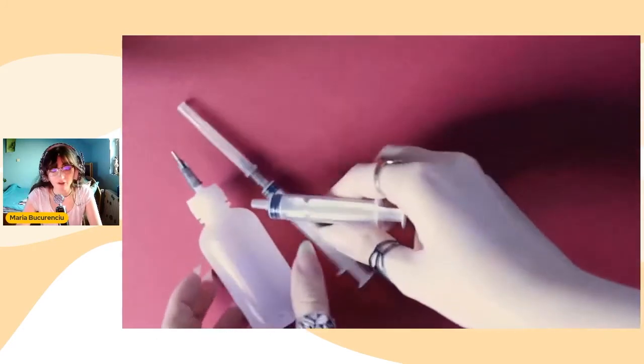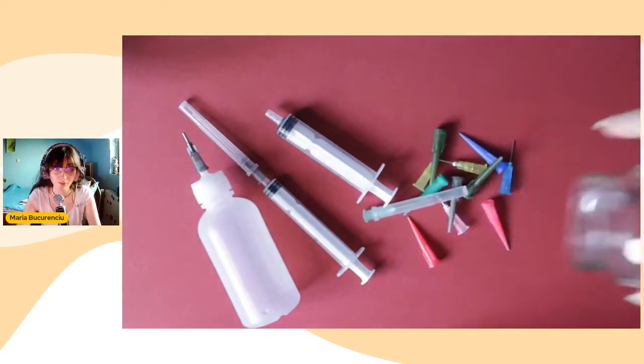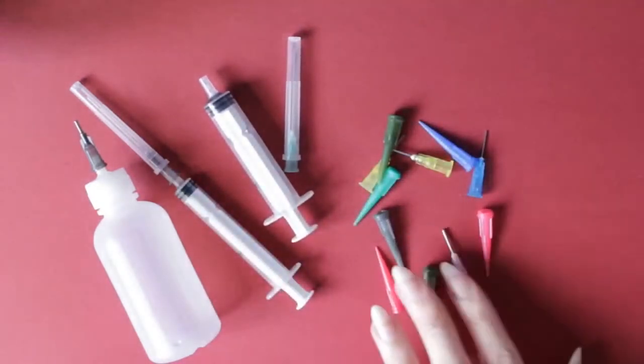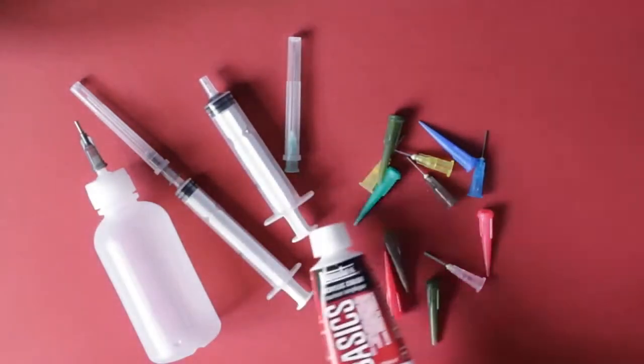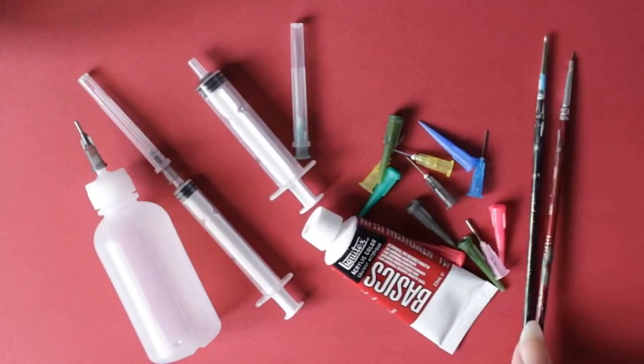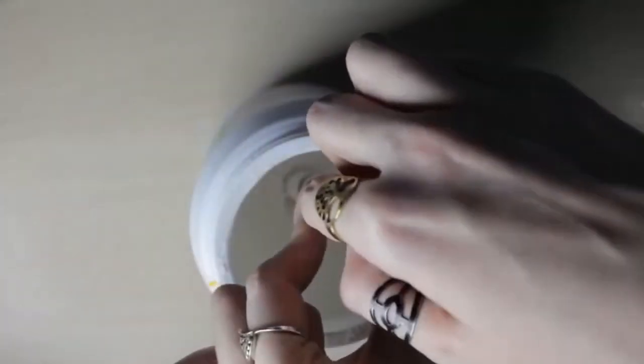Now we can move on to actually embossing our drawing. Before we start, I'll do a short recap of the materials: we use different types of syringes of different dimensions, the plastic container we showed earlier, different types of needles of different thicknesses that help us create all sorts of lines, acrylic paint if you want to add color, brushes for mixing and cleaning, and PVA glue. As we mentioned, you can mix your PVA glue with acrylic paint to add color.